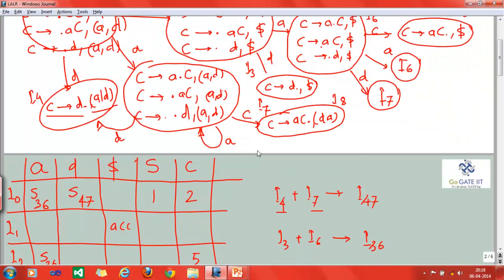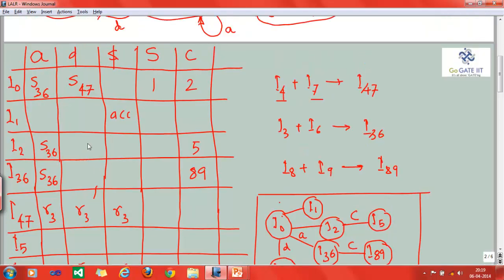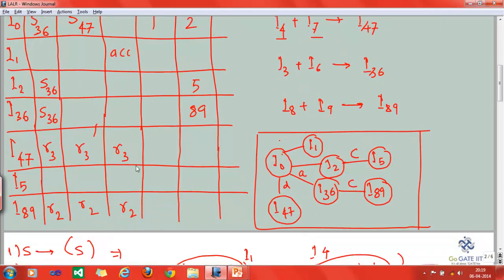The only difference being here, we have combined 4 and 7, 3 and 6, 8 and 9. We can see that the table construction remains the same. We will follow the same logic whatever we followed in the previous parser.